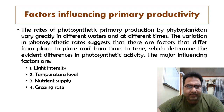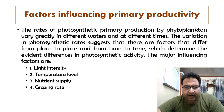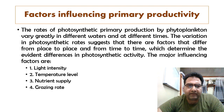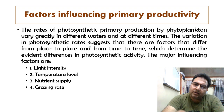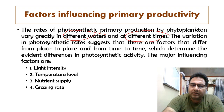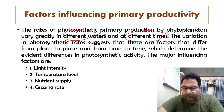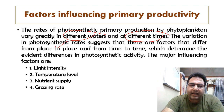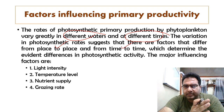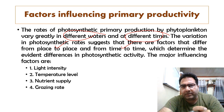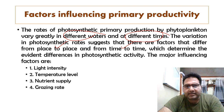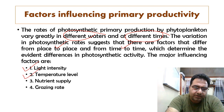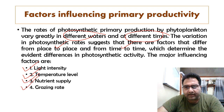Now let us discuss the factors influencing productivity. The rate of photosynthetic primary production by phytoplankton varies greatly in different waters and at different times. The major factors which influence primary productivity are light intensity, temperature, nutrient supply, and grazing rate.